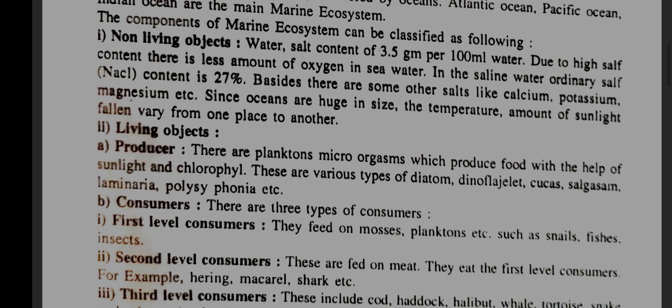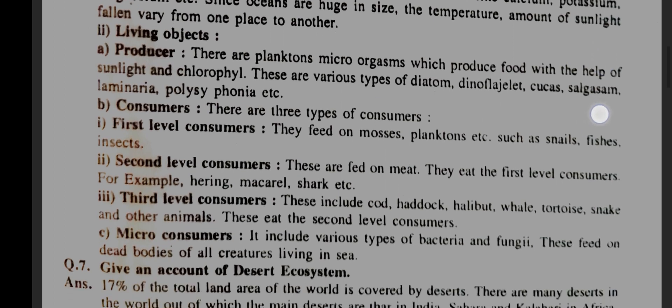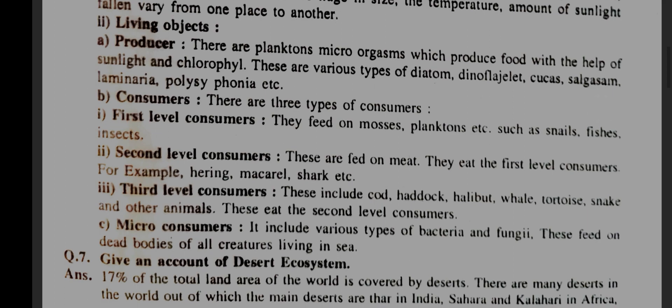Since oceans are huge in size, the temperature and amount of sunlight fallen vary from one place to another. Living objects — producers: there are planktons, micro-organisms which produce food with the help of sunlight and chlorophyll. These are various types of diatom,